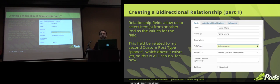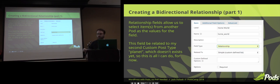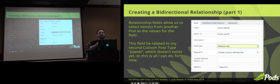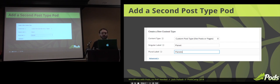Creating our bidirectional relationship fields, part one. We're going to add a second post type called Planets. The first step is to create a relationship field. We're going to leave it as a simple defined list for now, because we don't have anything related to yet — we're just creating a place to start. We're going to call it Homeworld, and this will allow us to store our Jedi's home planet. Instead of typing it out as a text field, we can add it as a post type from the Planets post type, so we're able to link all the Jedis that are from this planet.